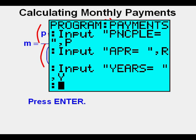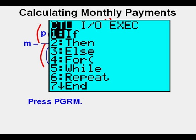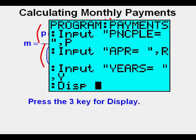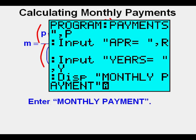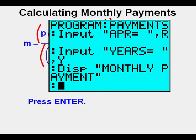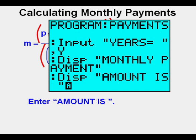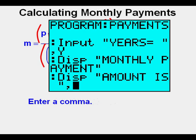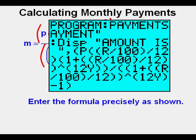Now we are about to enter the code giving us the answers or display based on the input values. Press the program key, arrow once to the right to the input-output submenu. This time, press three for display. Press second, then the alpha key. Enter 'MONTHLY PAYMENT' in quotation marks. Press enter. Now press the program key, arrow once to the right, press three for display. Press second, then alpha. Enter 'AMOUNT IS' in quotation marks, with an open space after 'IS' and before the final quotation mark. Get out of alpha by pressing the alpha key. Enter the comma above the seven key. Now enter the formula precisely as shown — every parenthesis must be exactly right or it won't work. Pause the video to enter all of this.